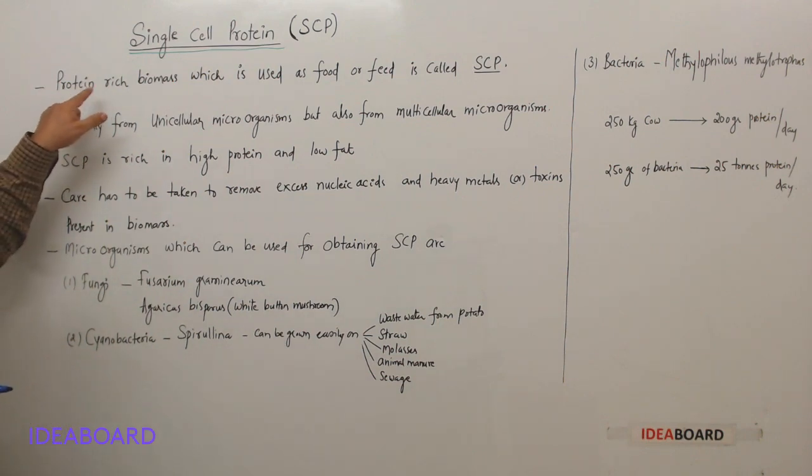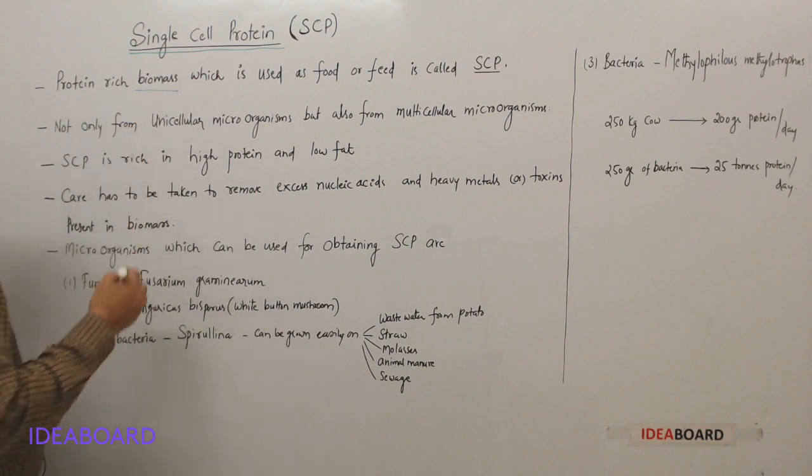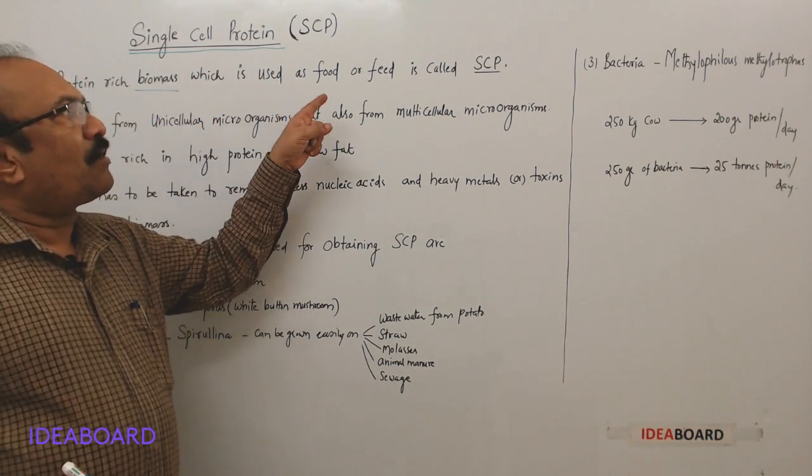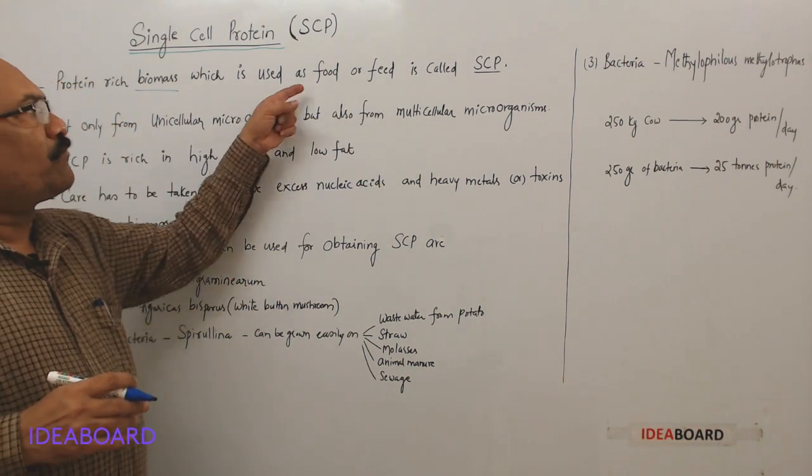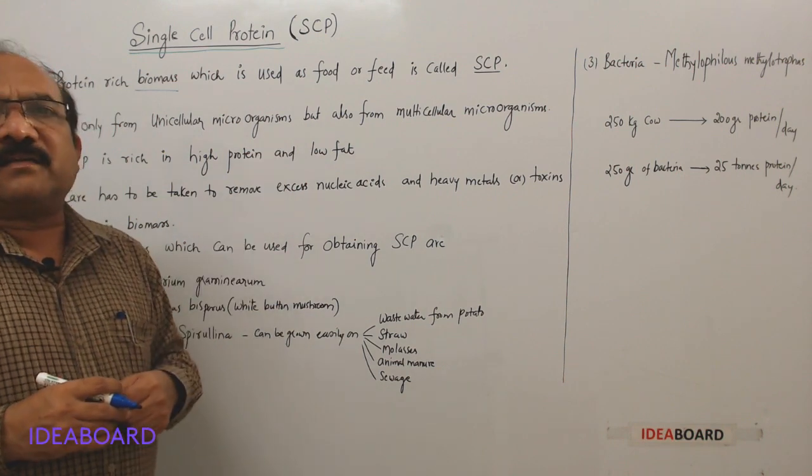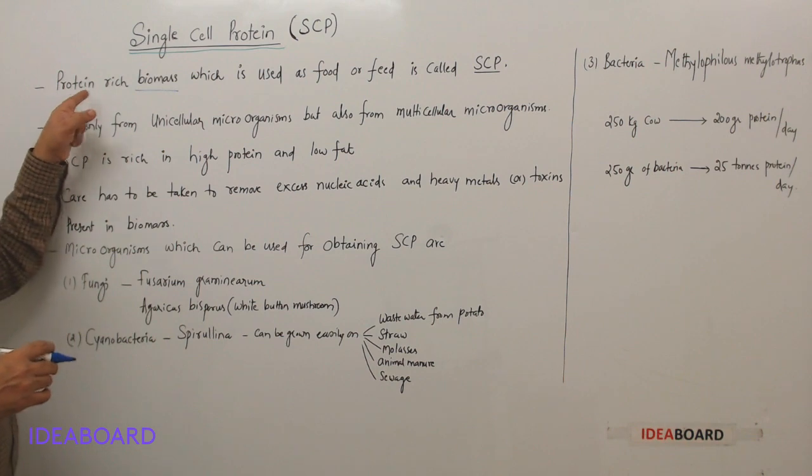Protein rich biomass which is used as food or feed is called SCP. Food for human beings and feed for the cattle, that is protein rich biomass.